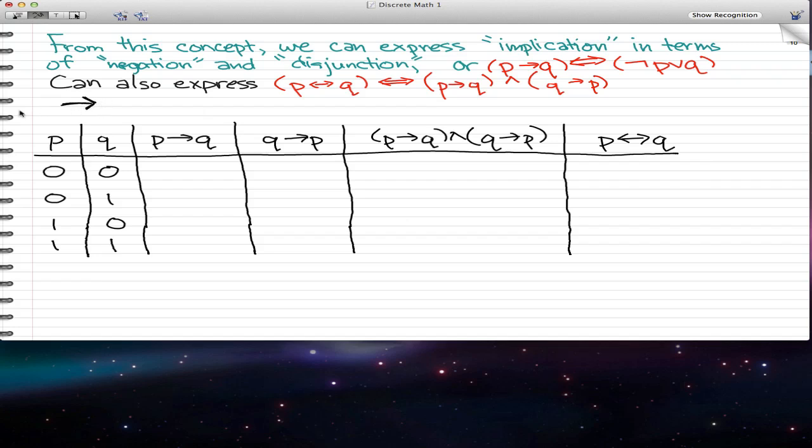So that's implication. We can express implication in terms of negation and disjunction. Now negation is this little gun symbol and disjunction is the or symbol which is an upside down carrot or a v.